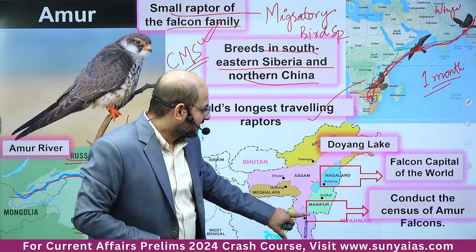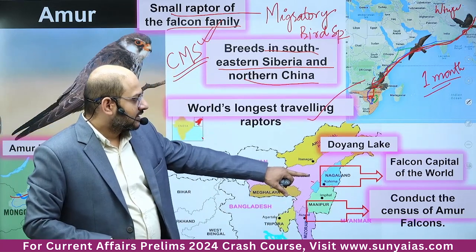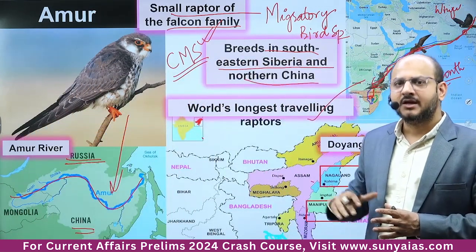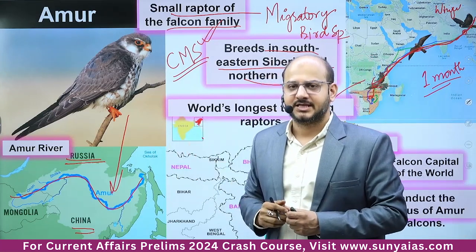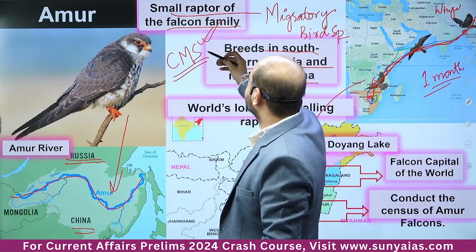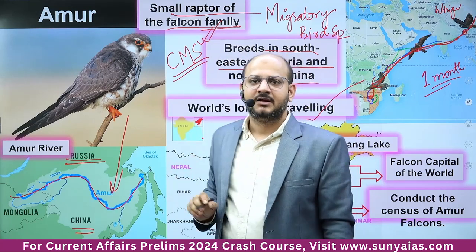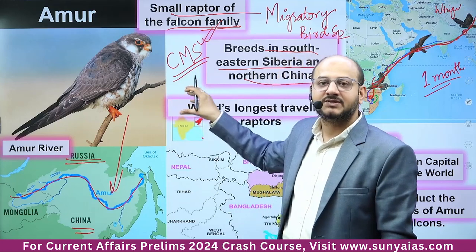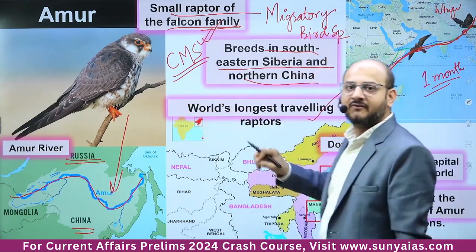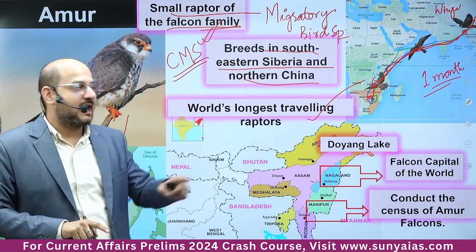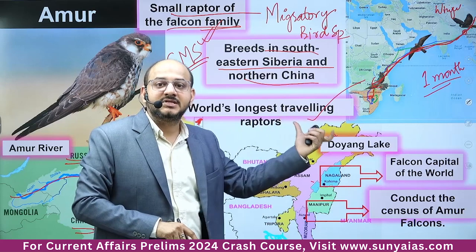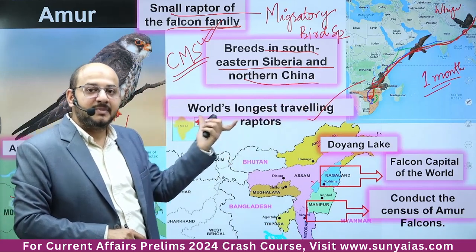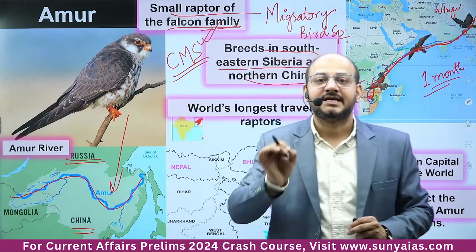The census of Amur Falcons is also being conducted going forward. We focus on migratory species and the falcon family because they are top predators in their trophic levels. When they stop in Nagaland they maintain the whole ecosystem of that area by feeding on insects. The ecosystem is dependent on their migration and their particular one-month stay in Nagaland. Therefore they are also called indicator species.